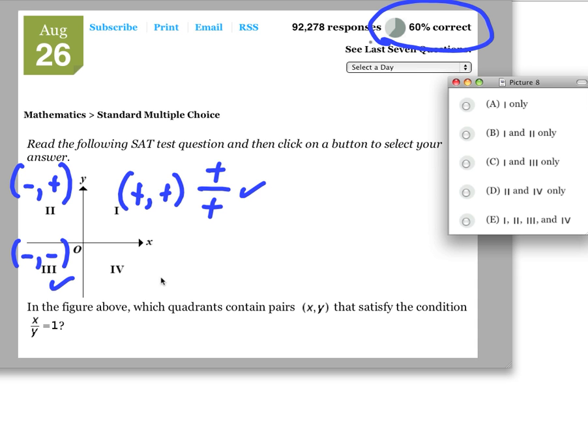Number 1 gets a check mark, number 3 gets a check mark. And then quadrant 4, well it's going to be a positive x and a negative y. So that one doesn't work.